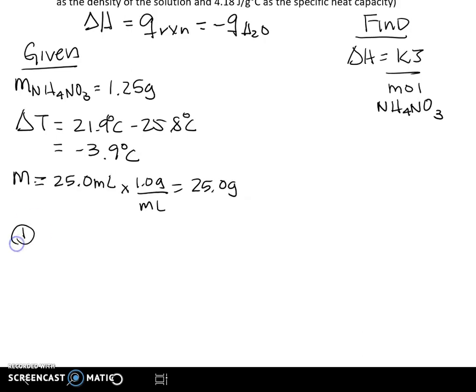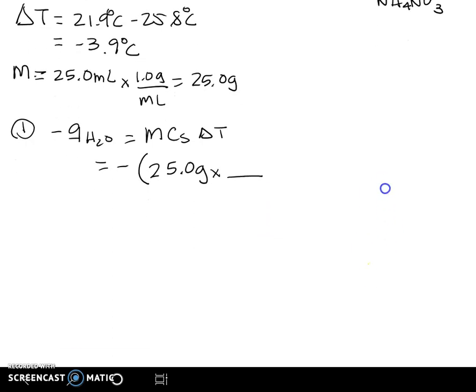So what's our first step? Our first step is we need to figure out minus Q of our water. And that's going to be using mc∆T. We have our mass, so it's going to be minus. Our mass is going to be 25 grams. And then our specific heat, recall, we're assuming the same properties as water. So we're going to put grams degrees C here and use that as our conversion factor, 4.18 joules, our specific heat capacity, times our temperature change, which we know is minus 3.9 degrees C.